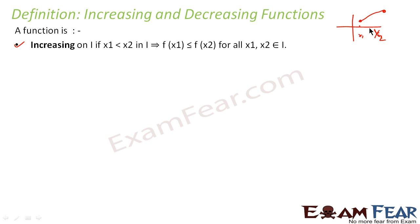So if you see the earlier graph, this graph is an increasing function. If you take two points where f(x2) is greater than f(x1) that satisfies the condition. But if the two points fall in the constant region, then f(x1) equals f(x2). So you have two conditions: either f(x1) equals f(x2), or f(x1) is less than f(x2). If either holds, the function is increasing.